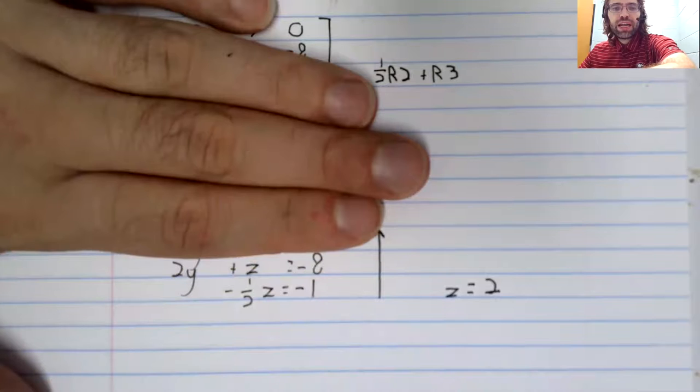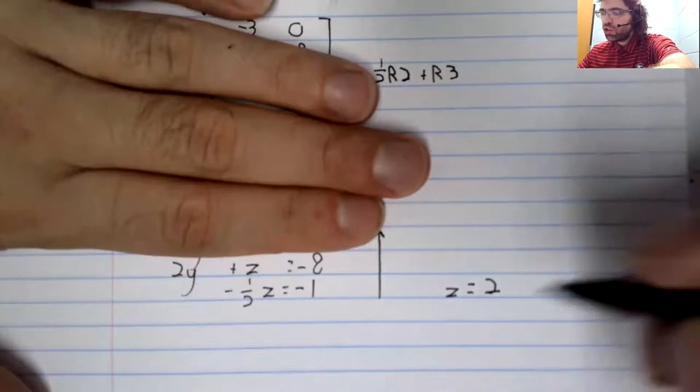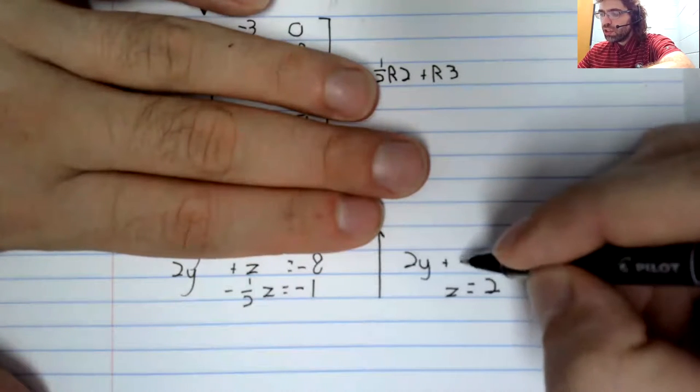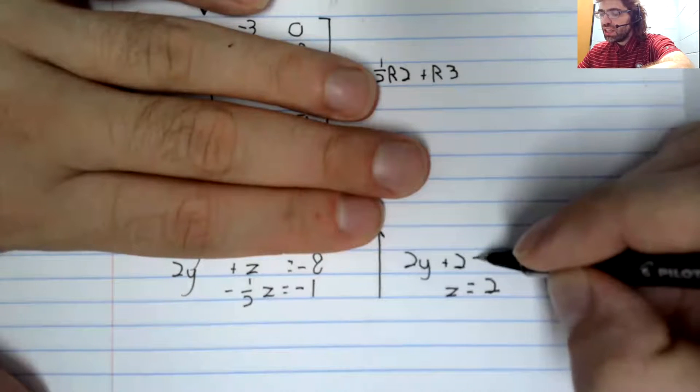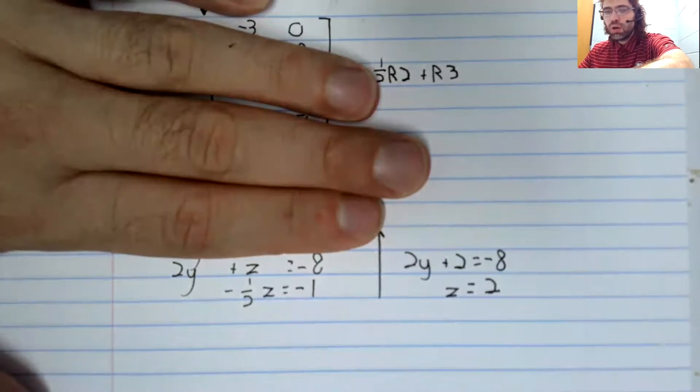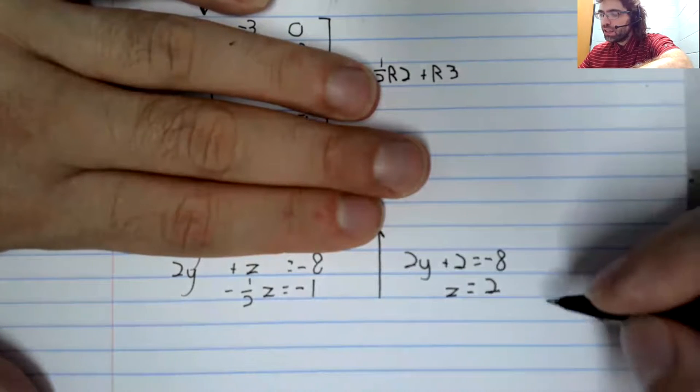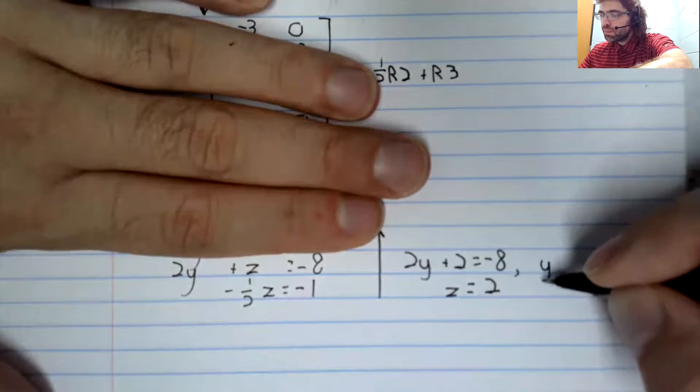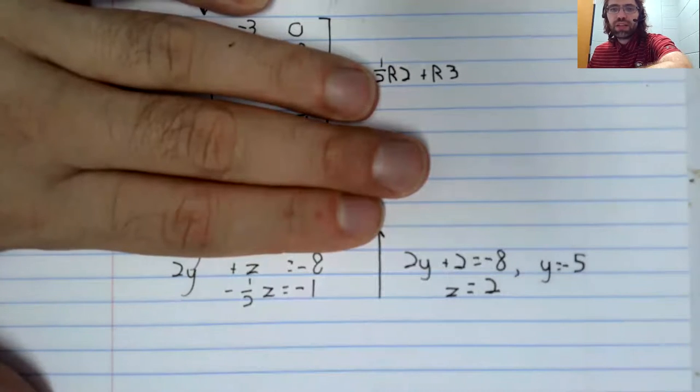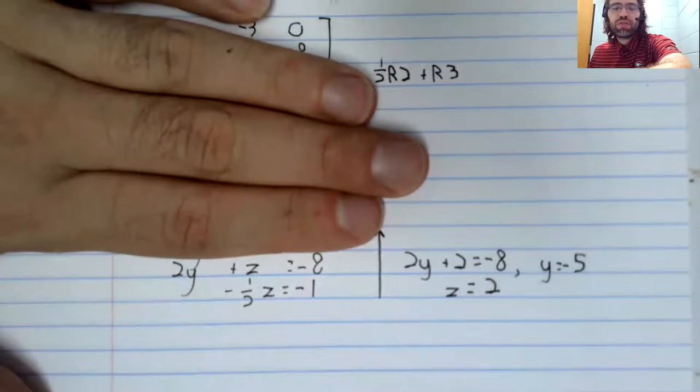This next equation, working up, because we know what z is, only involves the variable y. And we can solve that second equation for y.